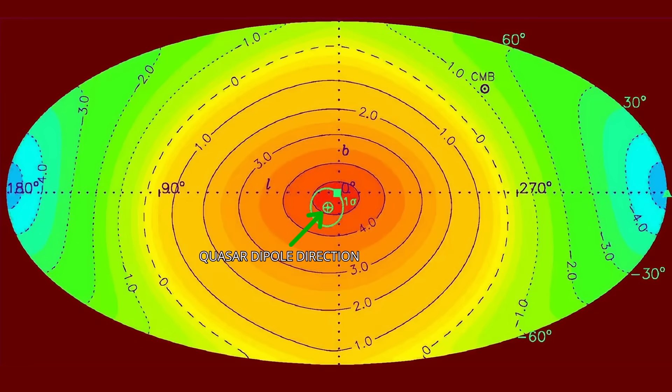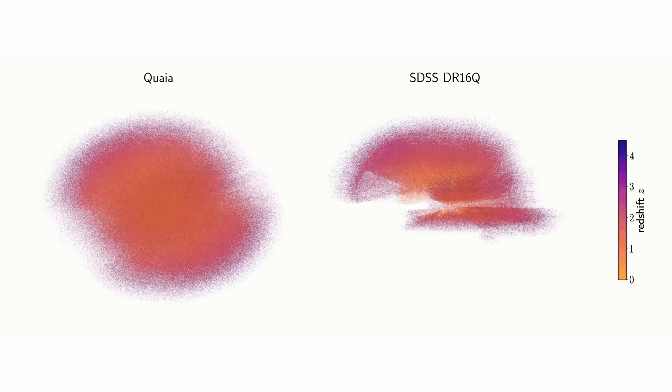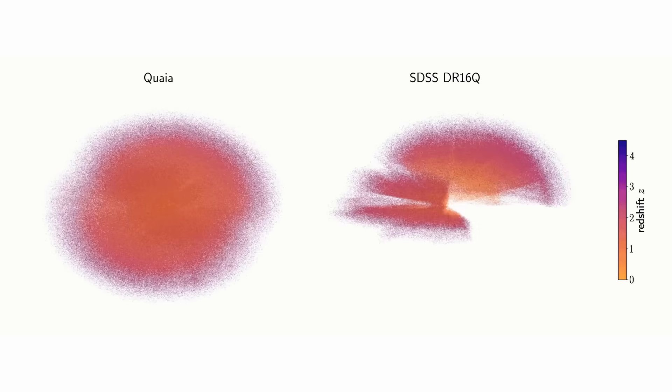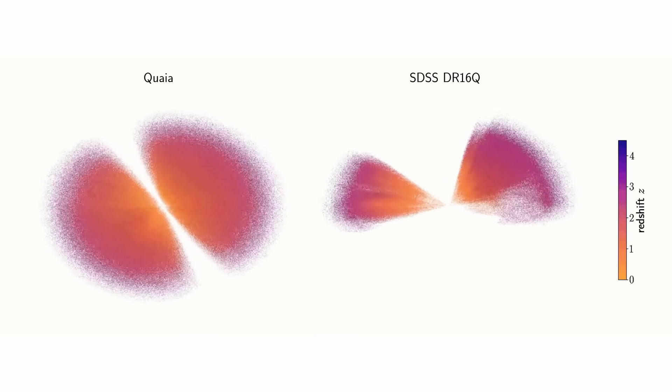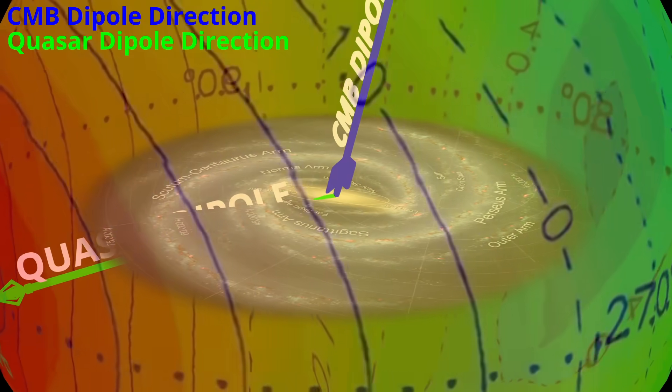The quasar dipole now joins this catalogue of anomalies. But unlike earlier flows which could be debated as statistical flukes or artifacts of limited data, the quasar signal rests on over a million independent objects. It is sharper, cleaner and harder to dismiss.